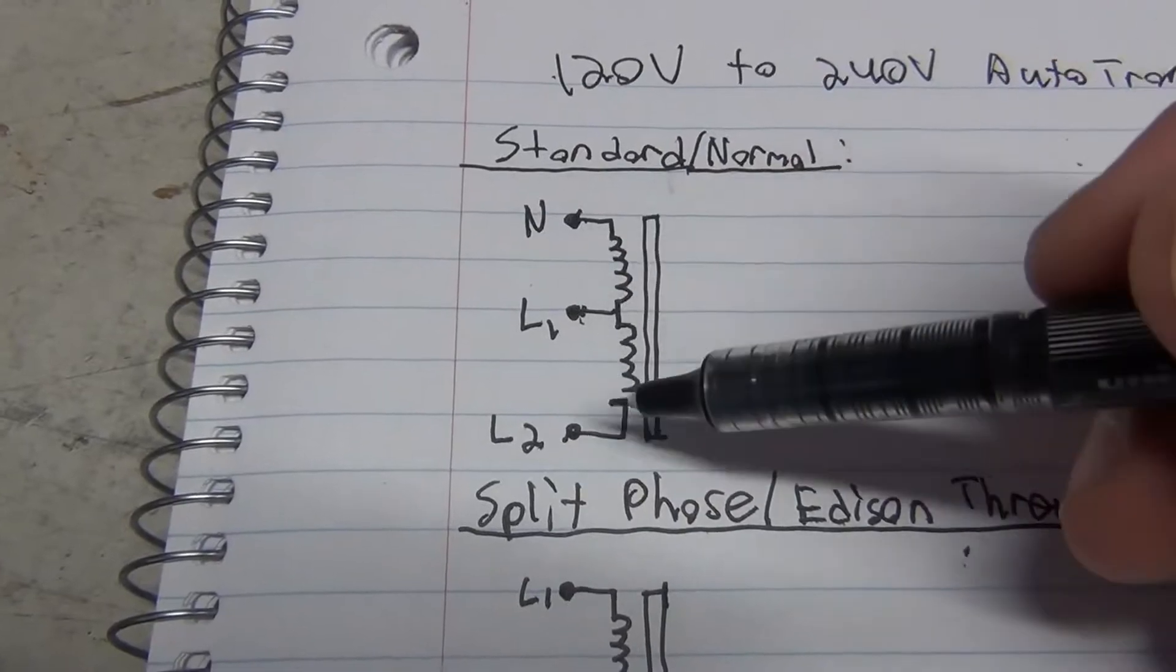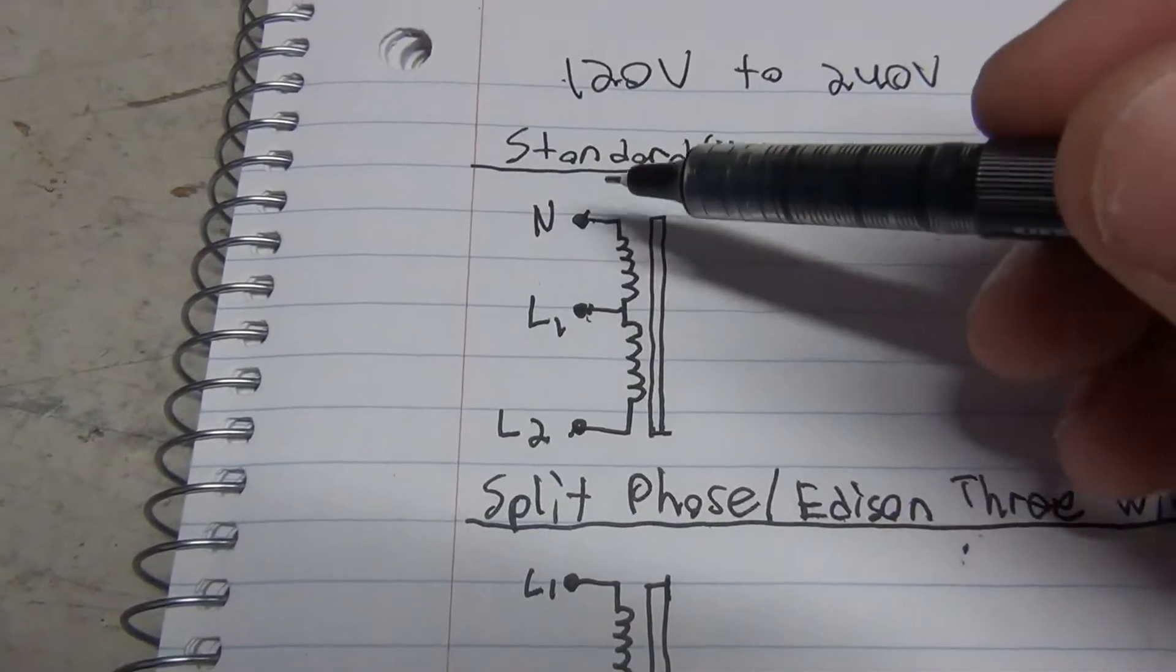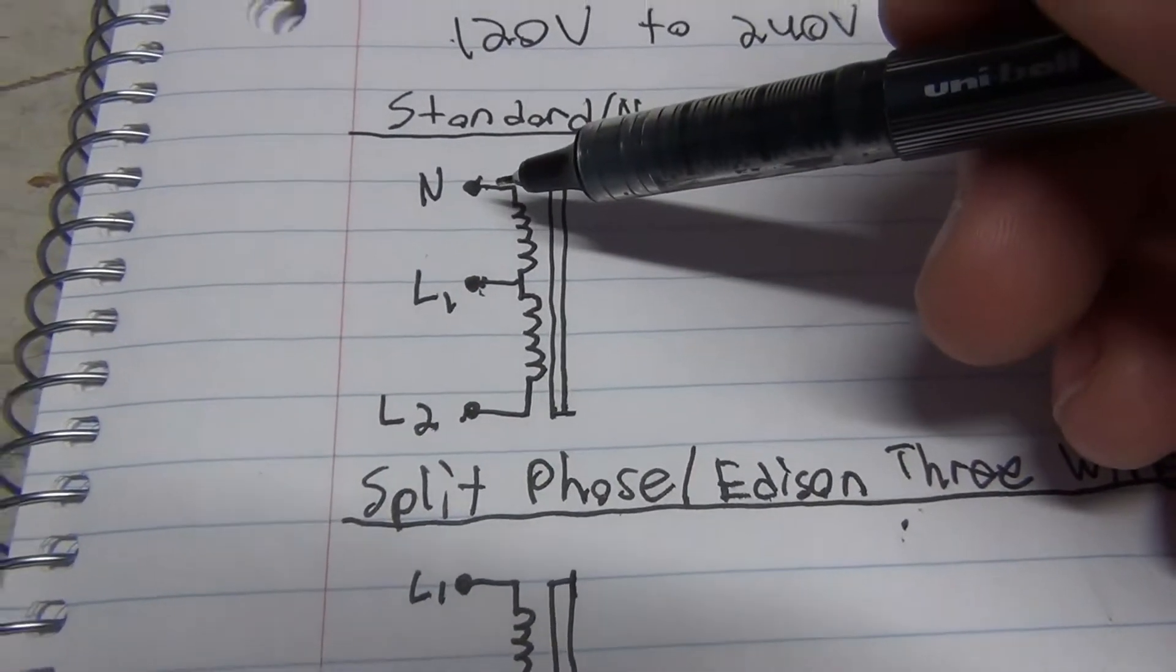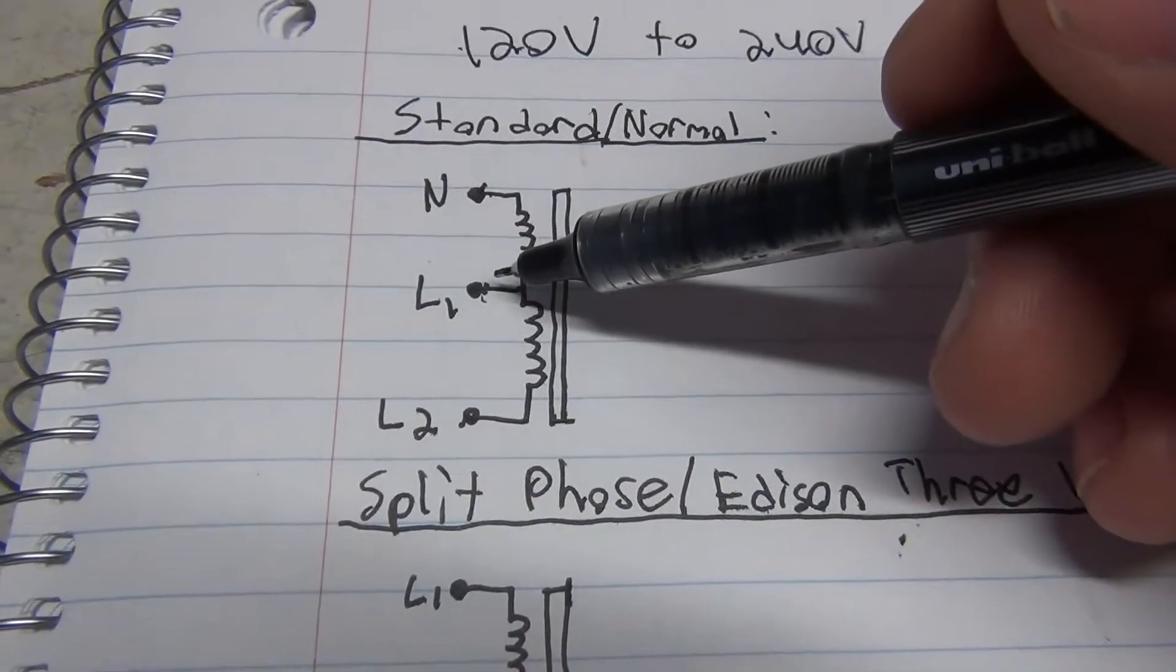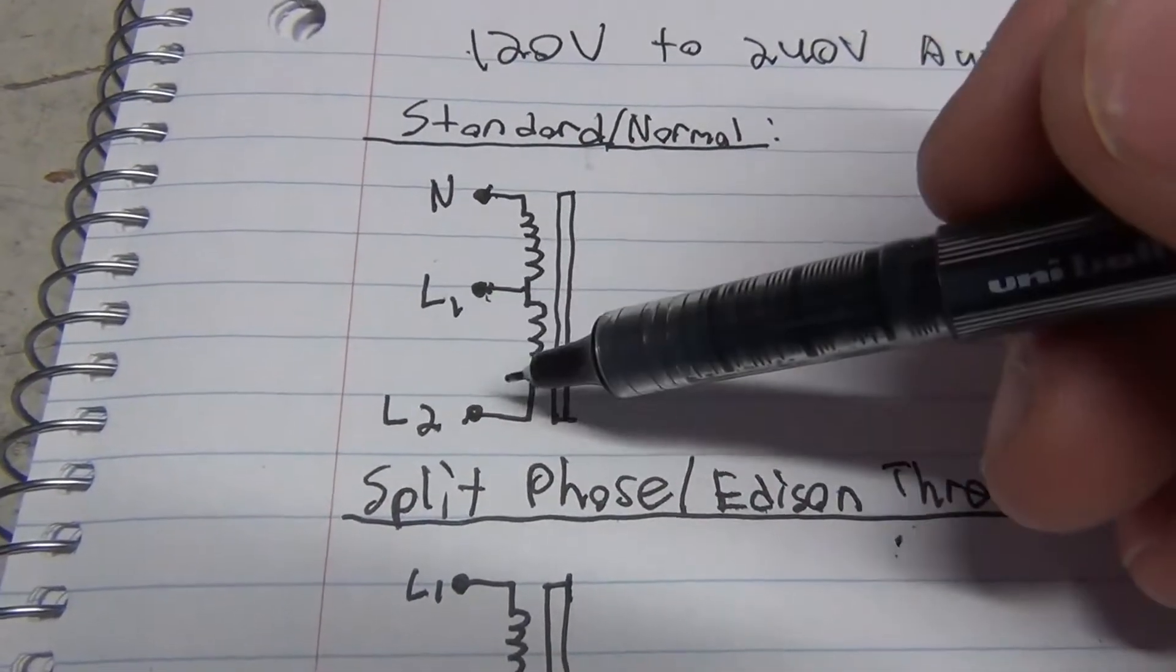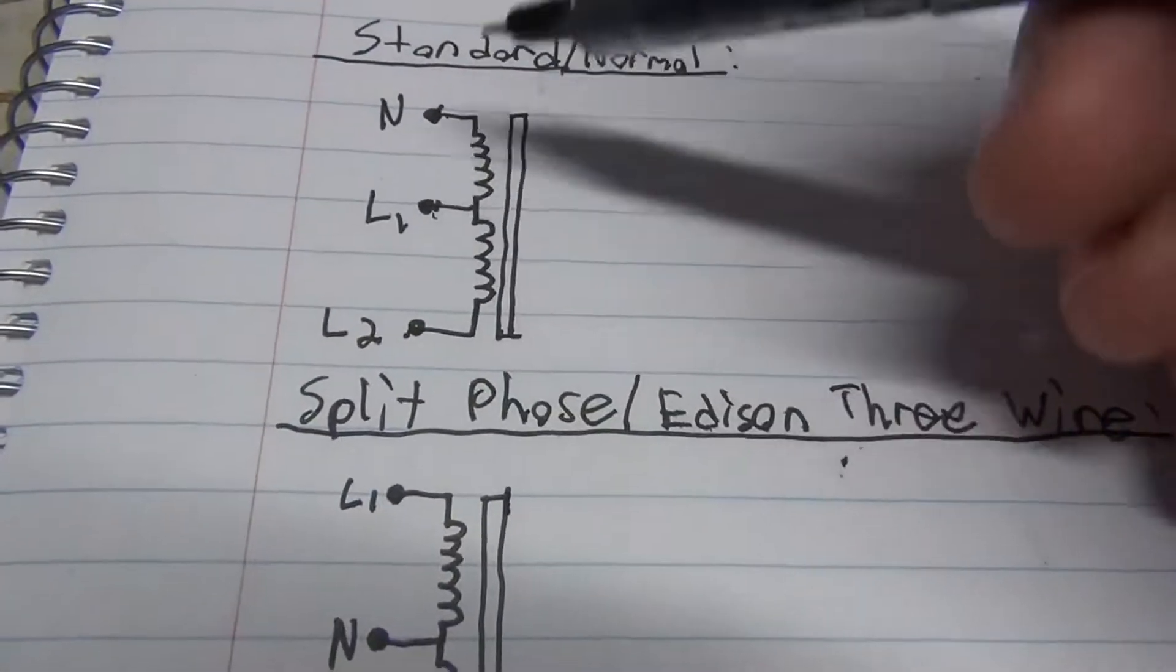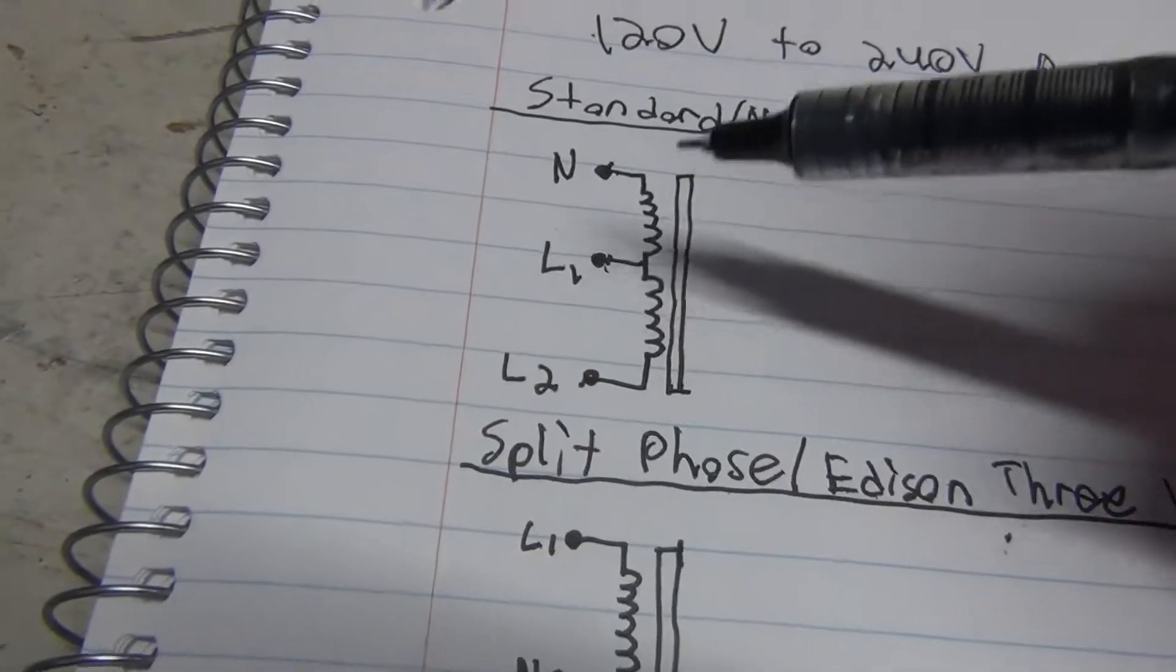So you get from neutral to line 2, 240V, and neutral to line 1, 120V. But you can't do line 1 to line 2. That won't give you 240 volts, you'll just get 120 from that.